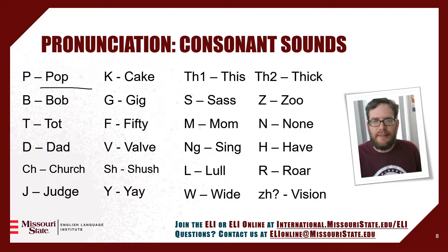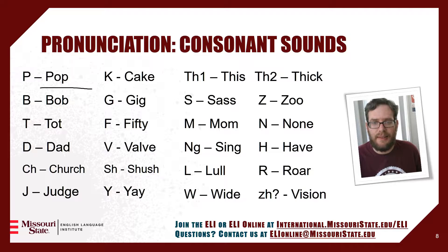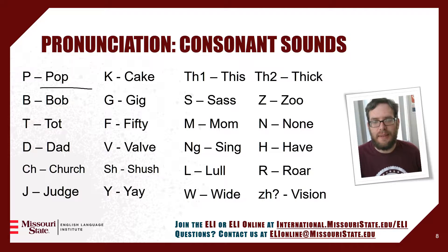The S and Z sounds are very important, because we use S at the end of a word for plural nouns and sometimes for verbs. Sometimes that can sound like S, like in sass. Sometimes it can sound like a Z, like in zoo. So that's another complicated rule — just know that at the end of words, sometimes S makes an S sound, sometimes it makes a Z sound.